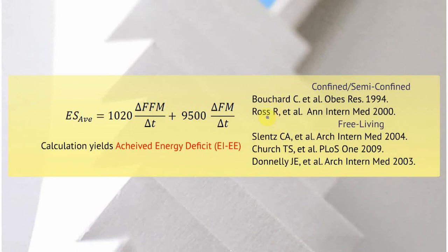That calculation actually gives me the actual achieved deficit of EI minus EE. There was a total of 13 studies after we ran it through these criteria. One of them was Claude Bouchard's confined study in male twins, seven pairs of male twins. The second was Bob Ross's study in males and females.